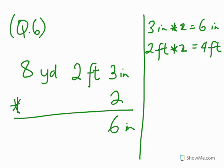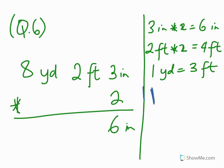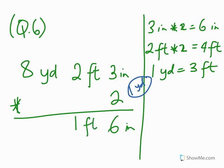Then you ask: what is the relationship between feet and yards? One yard makes 3 feet. We can get 1 yard from 4 feet. The remainder will be 1 foot, because 4 feet minus 3 feet is 1 foot. Then 8 yards times 2 gives us 16 yards.